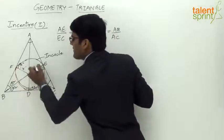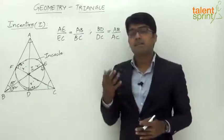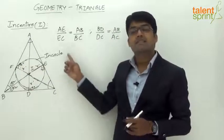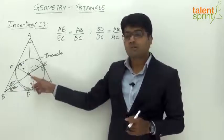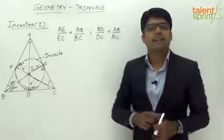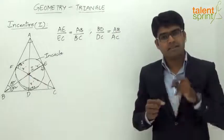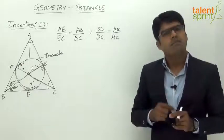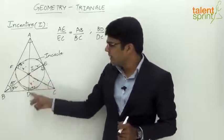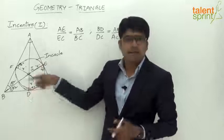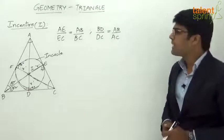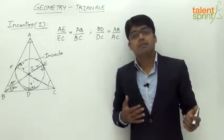Comparing incenter with circumcenter: the circumcenter is the center of a circle passing through all three vertices, circumscribing the triangle, with circumradius denoted by capital R. The incenter is the center of a circle touching all three sides, inscribed within the triangle, with inradius denoted by small r. The inradius is the perpendicular distance from the incenter to any of the three sides, and all three such distances are equal.